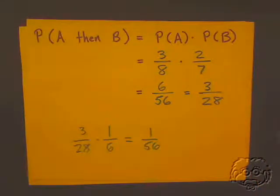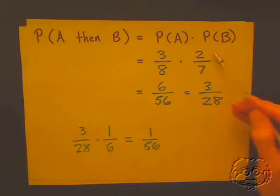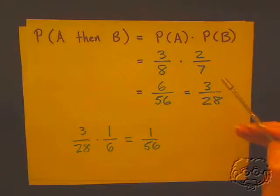So what's the probability of pulling out a third blue marble? Just multiply that by one over six. Two minus one is one, and seven minus one is six. That turns out to be one over fifty-six.